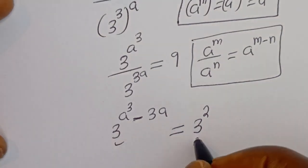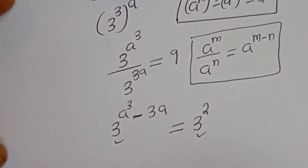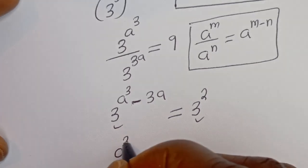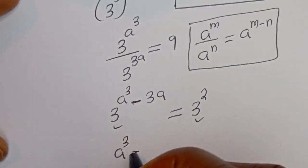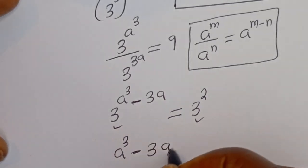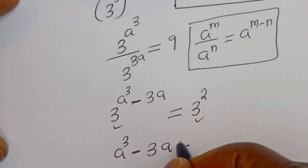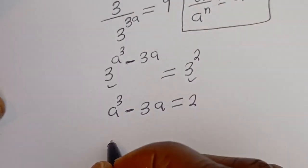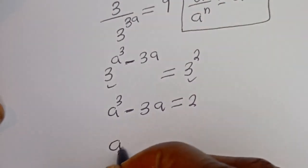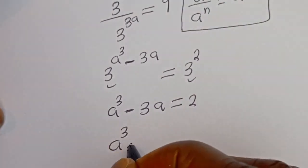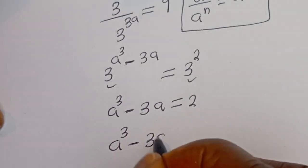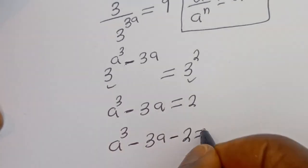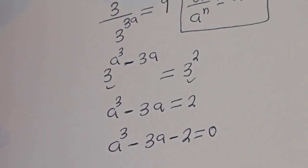Now they have the same base. So we have A cubed minus 3A minus 2 is equal to 0.